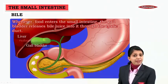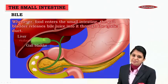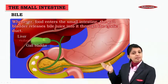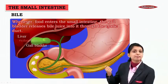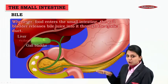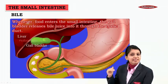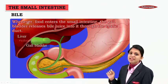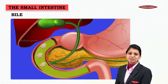Whenever food enters the small intestine, the gallbladder releases bile juice into it through the cystic duct. Food enters the small intestine from the stomach through the duodenum, and the gallbladder releases the bile juice through the cystic duct, which we can see here.